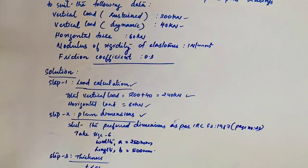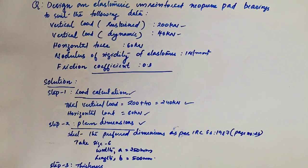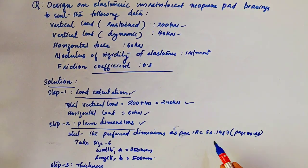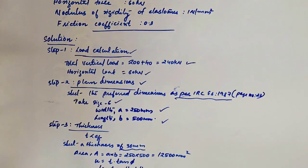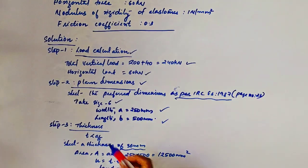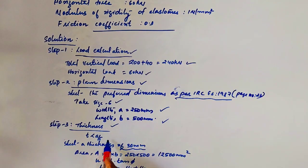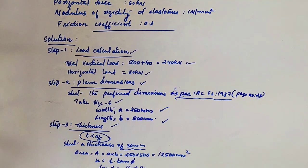Step 2: Plan dimension. For an unreinforced elastomeric bearing, the plan dimension is taken as per IRC 83-1987. Select index number size 6, corresponding to width A equal to 250 and length B equal to 500.